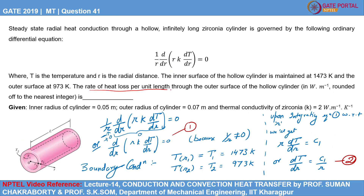The rate of heat loss per unit length through the outer surface of the hollow cylinder is 18,664 W/m. To learn more about steady-state heat conduction through cylindrical geometry, refer to Lecture 14 on Conduction and Convection Heat Transfer by Professor Suman Chakrabarti and Professor S.K. Som, Department of Mechanical Engineering, IIT Kharagpur. Thank you.